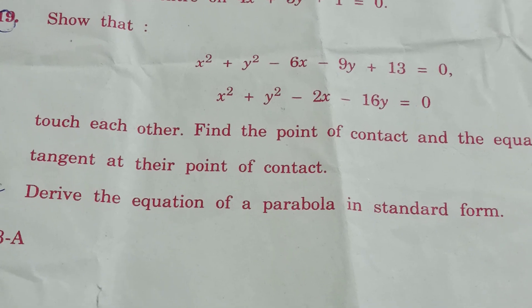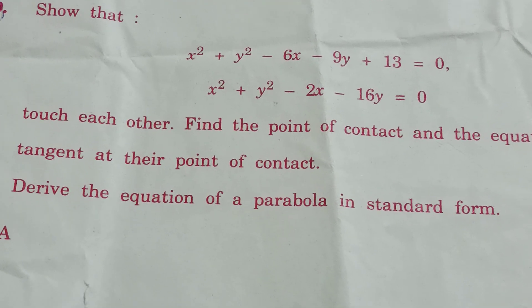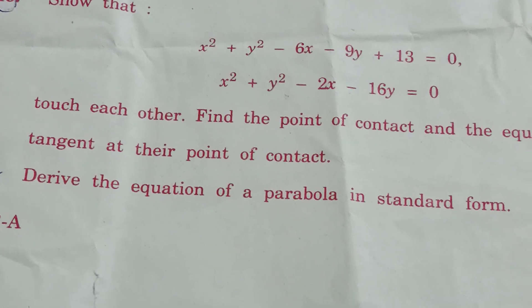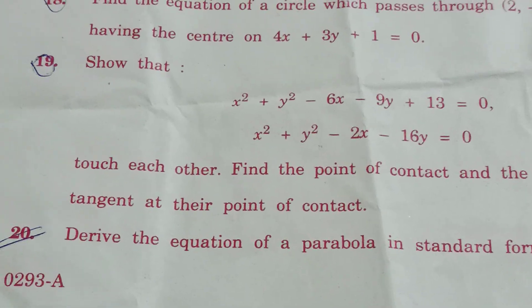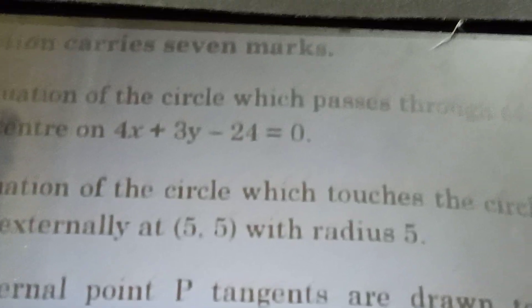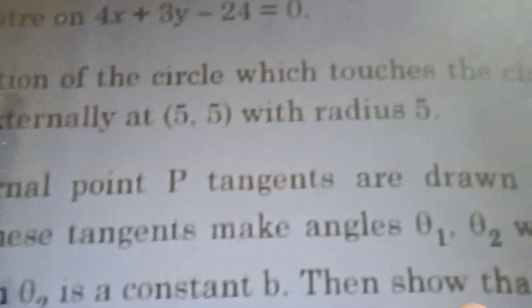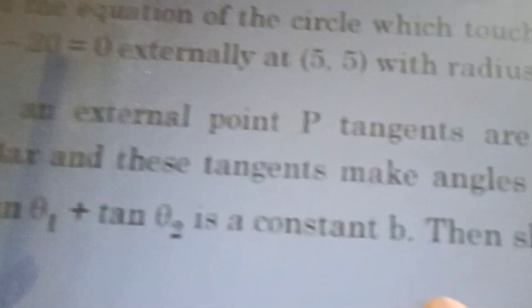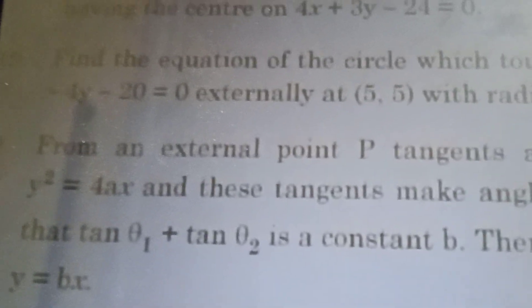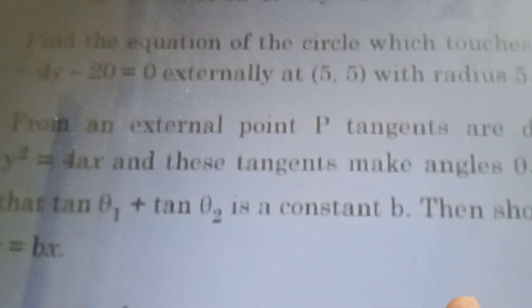Parabola — the parabola last year is in standard form. y² = 4x is the standard form. It is very easy to use. Find the equation of the circle on this one. From an external point P, tangents are drawn to the parabola. These tangents make angles θ₁ and θ₂. tan θ₁ + tan θ₂ is a constant. Then we show that on y = vx and h. This is the actual example problem. This is the epi paper.